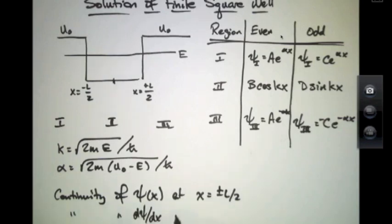And the derivative has to be continuous at x equals plus or minus l over 2. And we'll call this condition 1 and this condition 2.